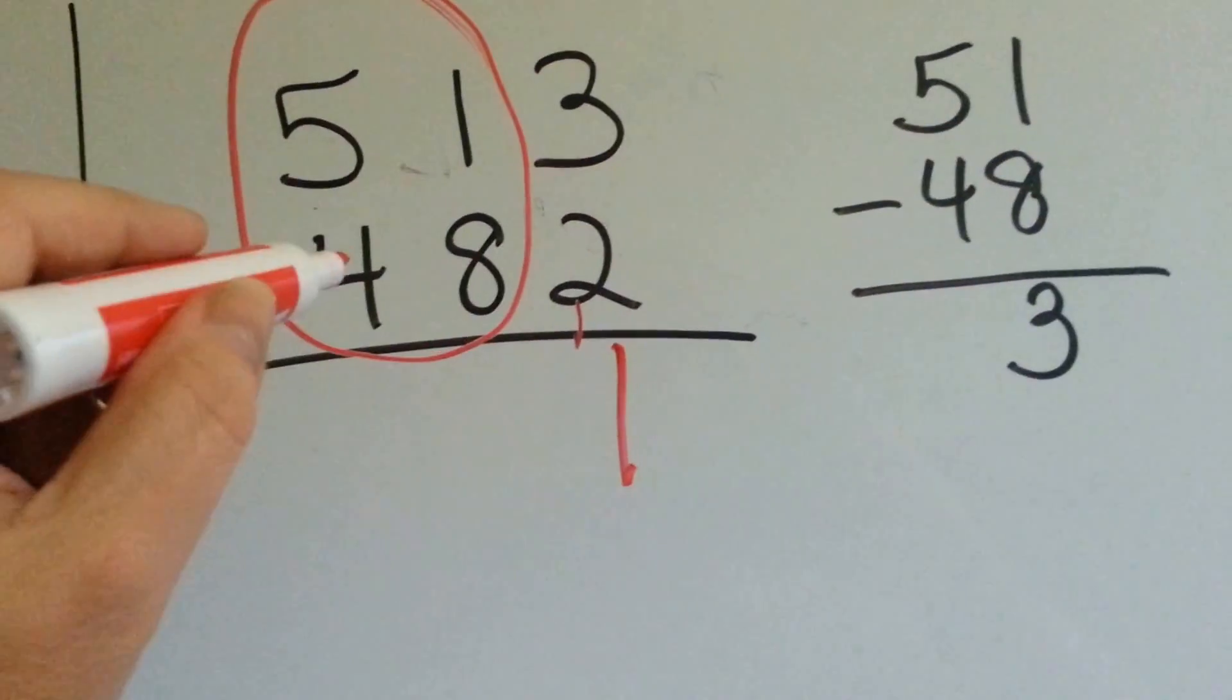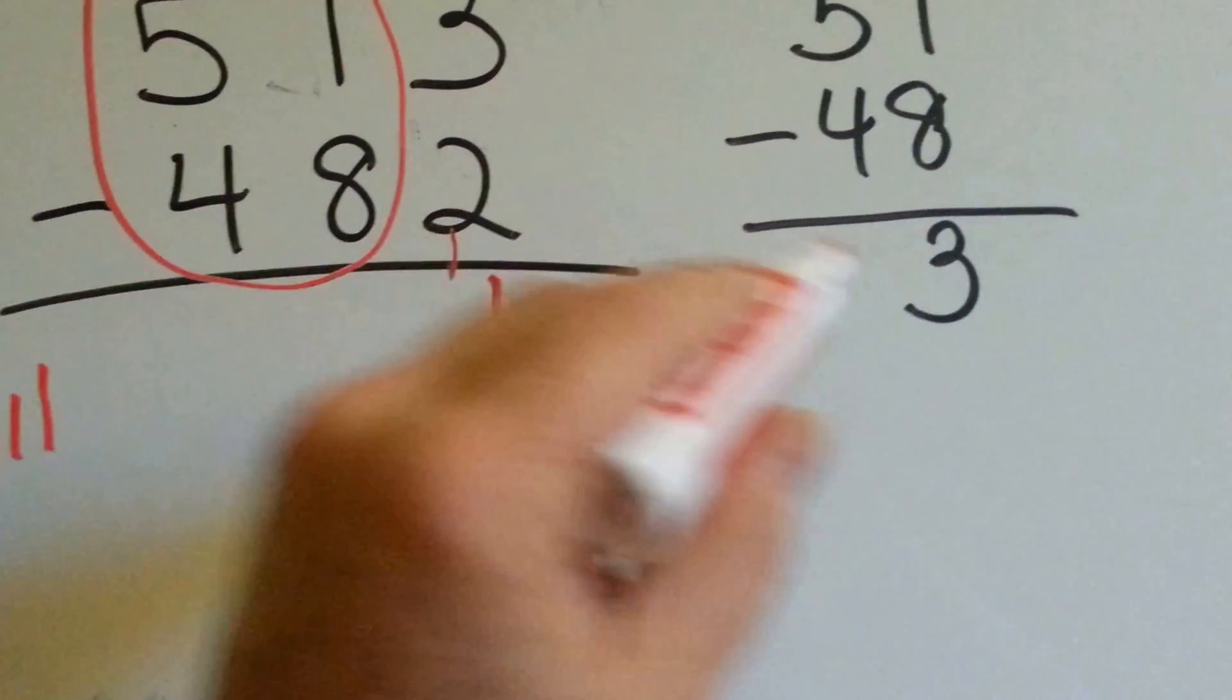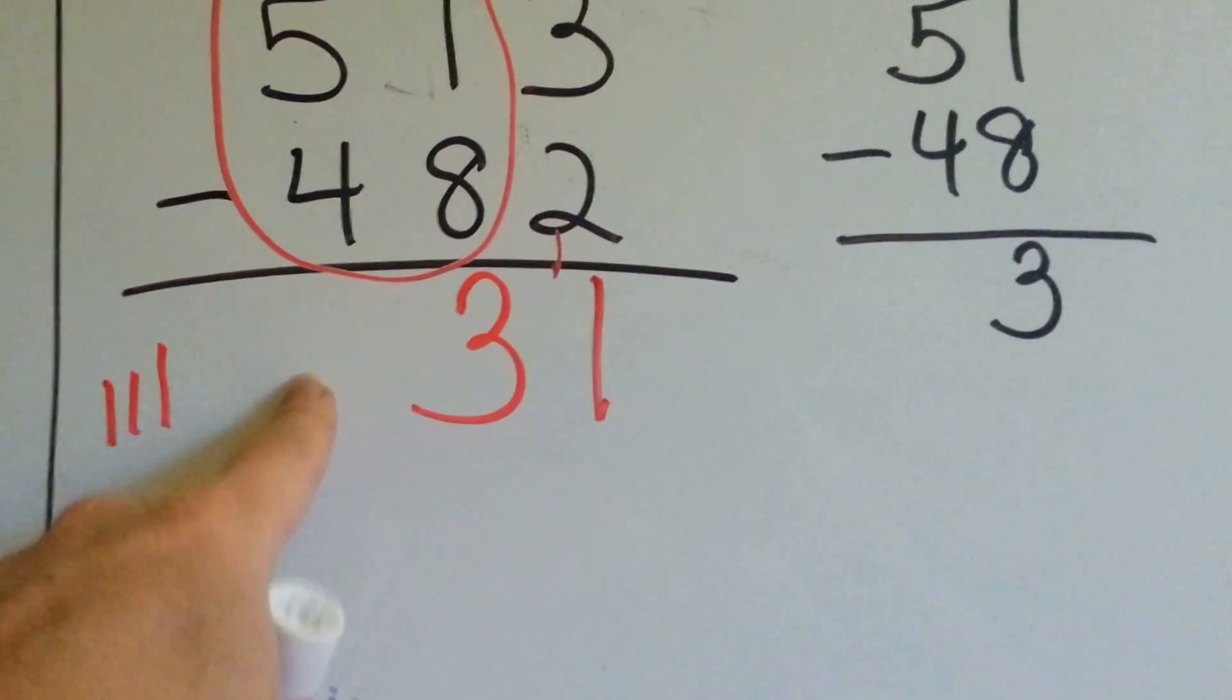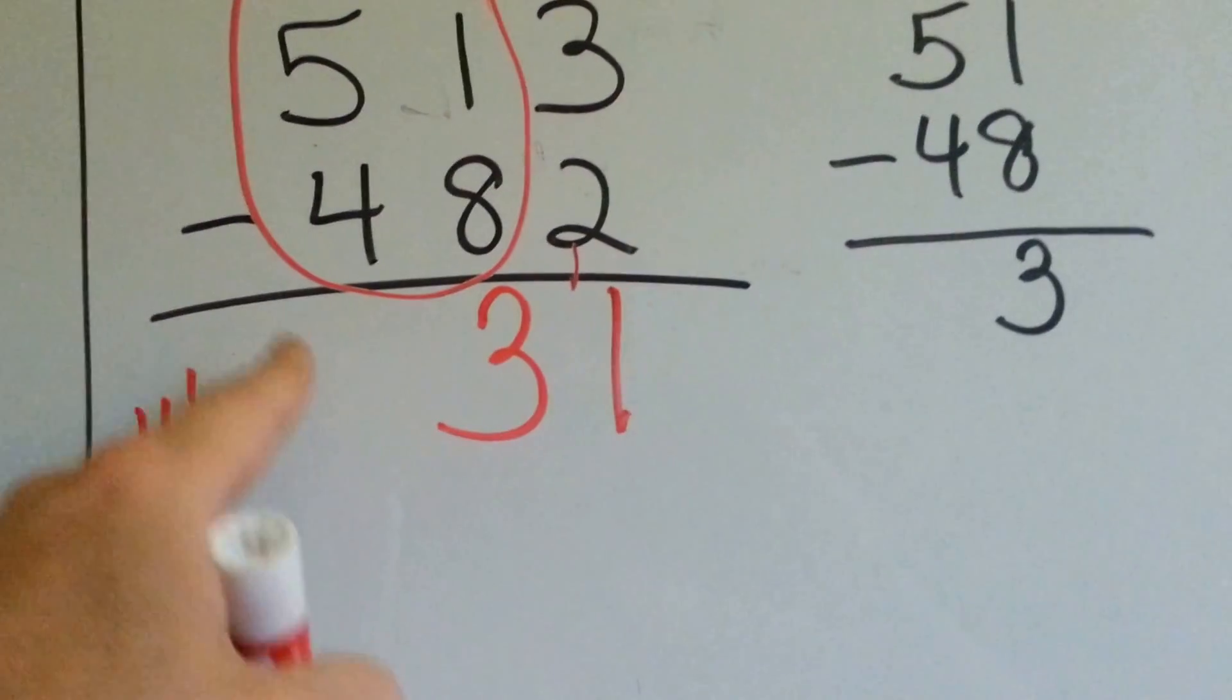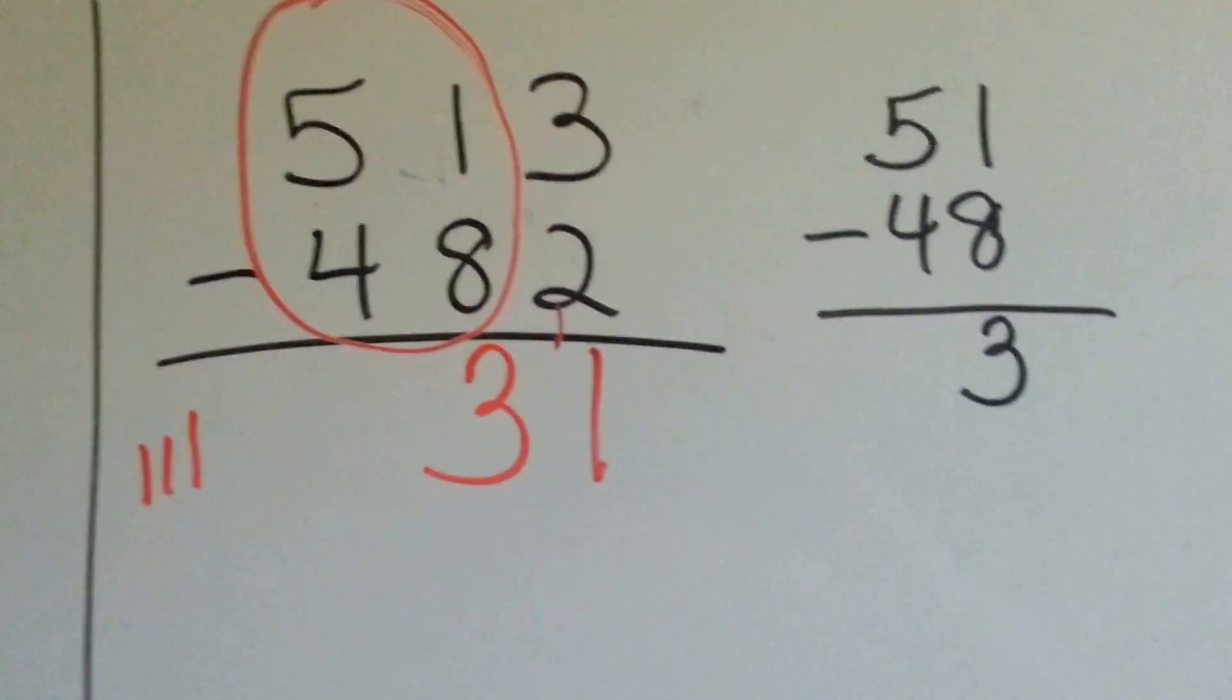It would be a lot quicker to just say 48, 49, 50, 51, 3. And because there's no other place here, we could write a 0, but it's not necessary. The answer is just 31. It's a lot faster than borrowing. Let's take a look at this one.